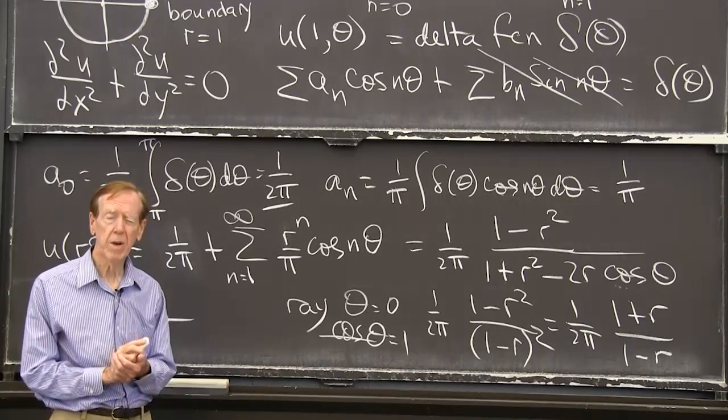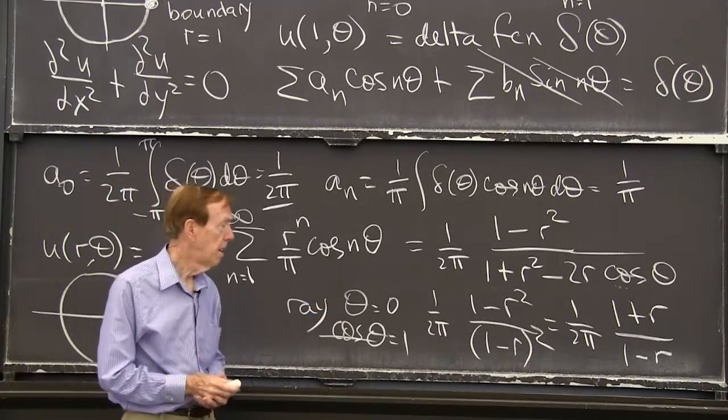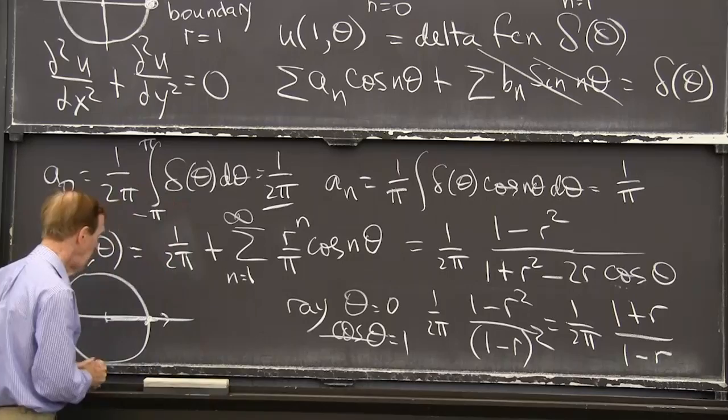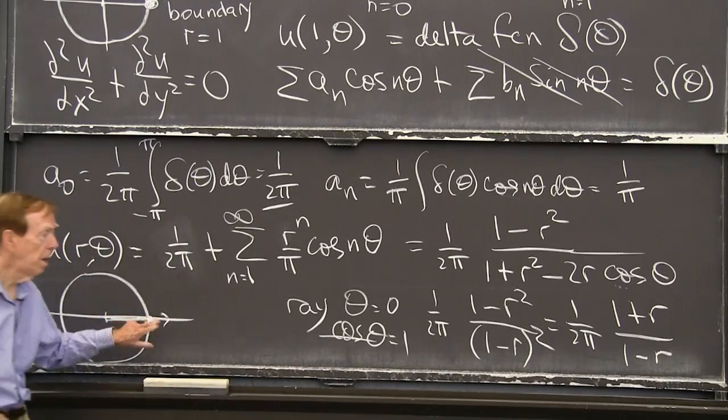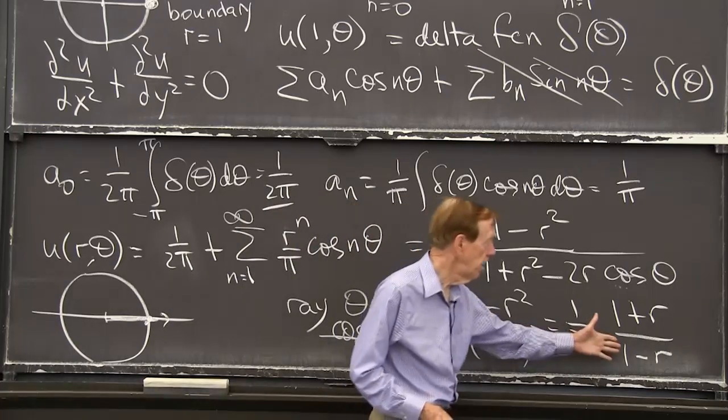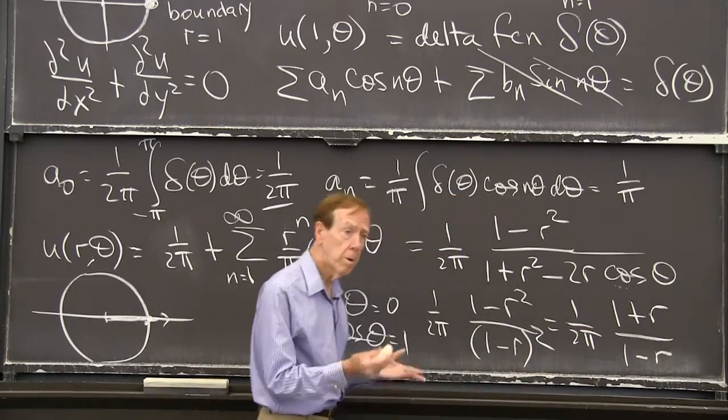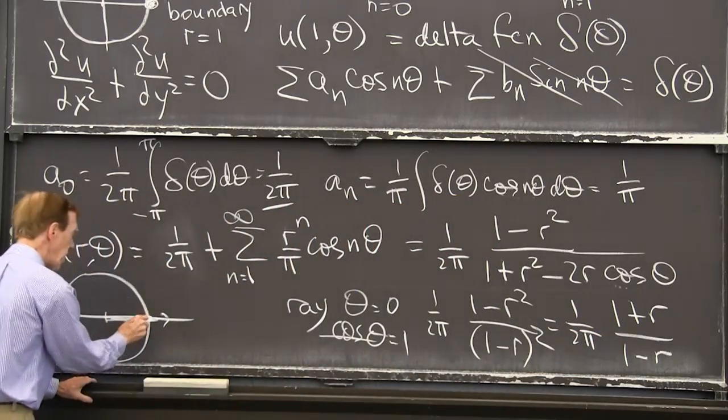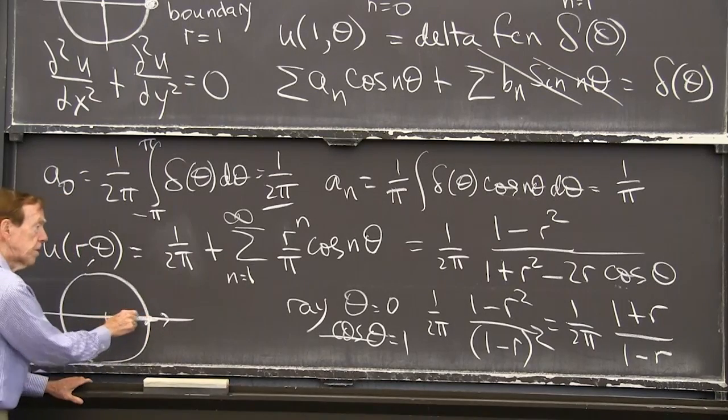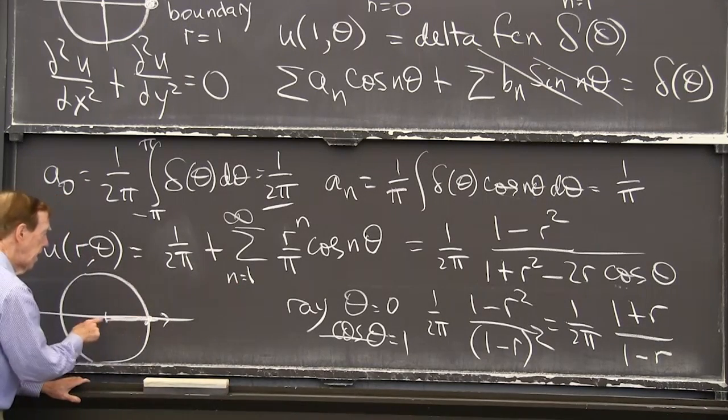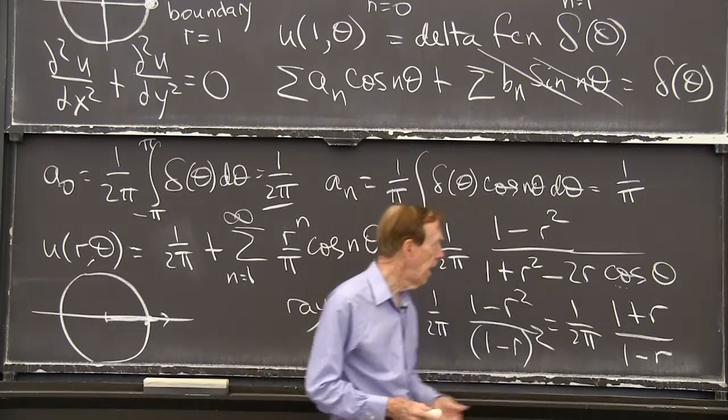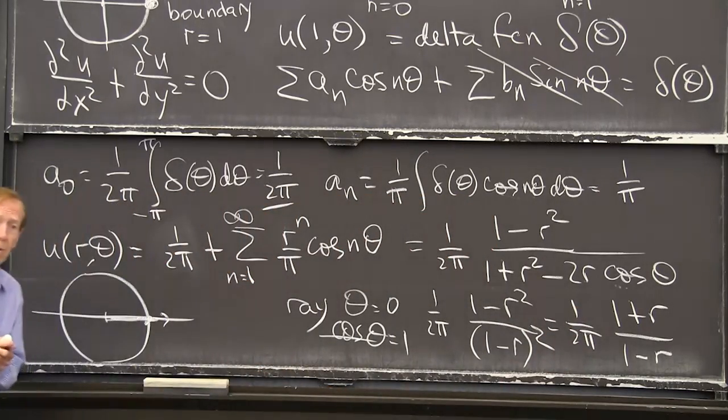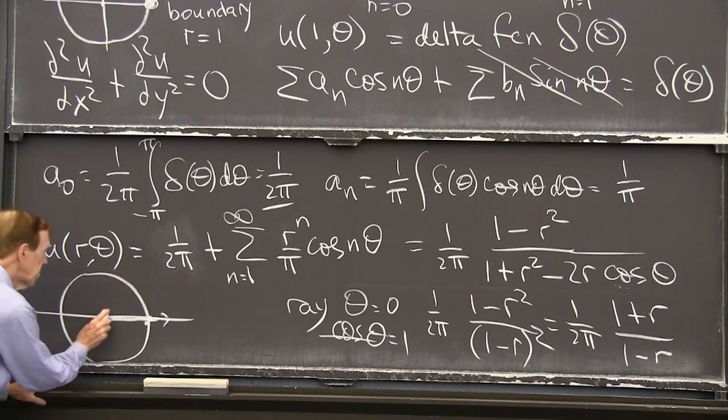You don't often, for partial differential equations, get some nice expression for the solution. So that's the solution. And as r goes to 1, this solution blows up. Right. The temperature is infinite on the boundary. But the temperature is something reasonable inside. And at r equals 0, I have 1 over 2π. Well, of course, it's the average value. Right at the center, the temperature is going to be the average on the boundary. That's a natural key property of Laplace's equation.